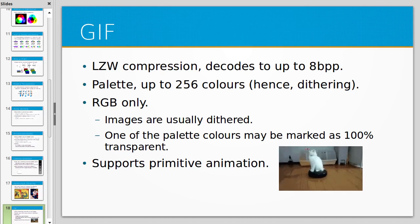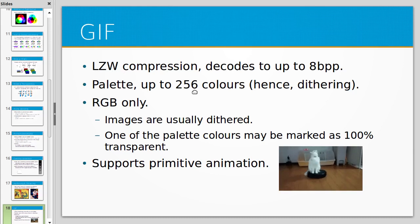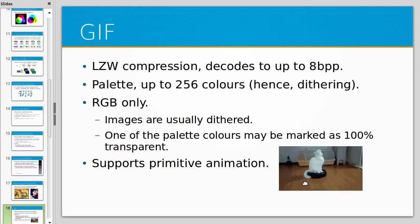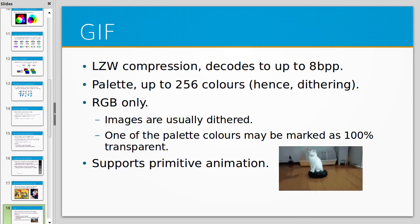The GIF format only encodes up to 8 bits per pixel, so it can only encode 256 colours — a very poor representation of colour, which is why dithering is used. You can see that colours are only approximate and don't smoothly transition. It's RGB only, but you can make one colour transparent. It's a fairly primitive format, but it does support animation, which is why it's still around.